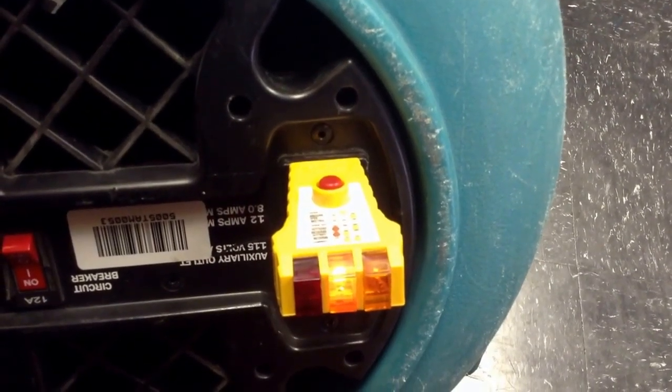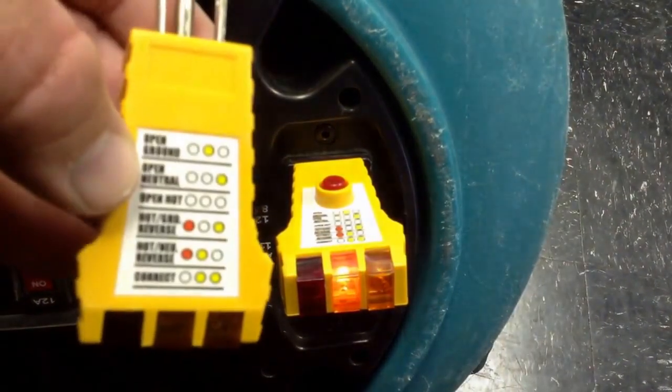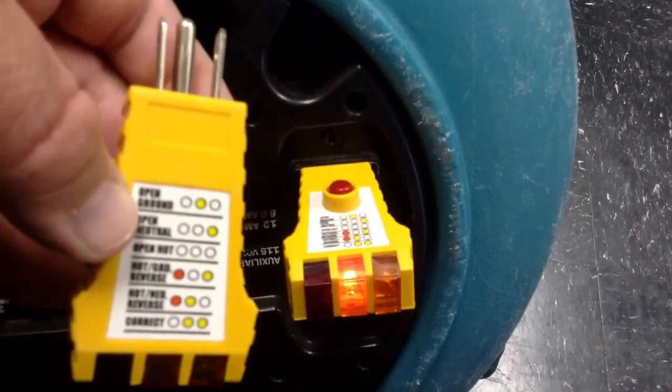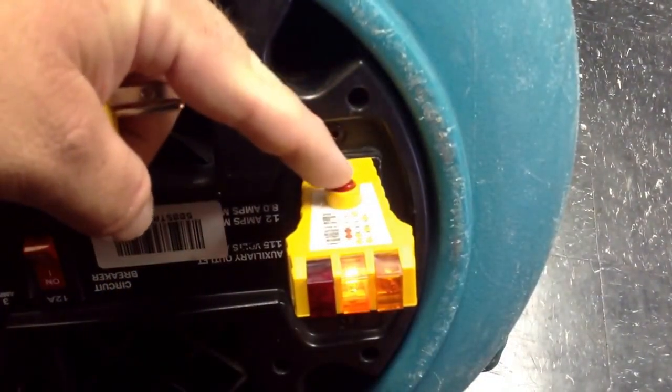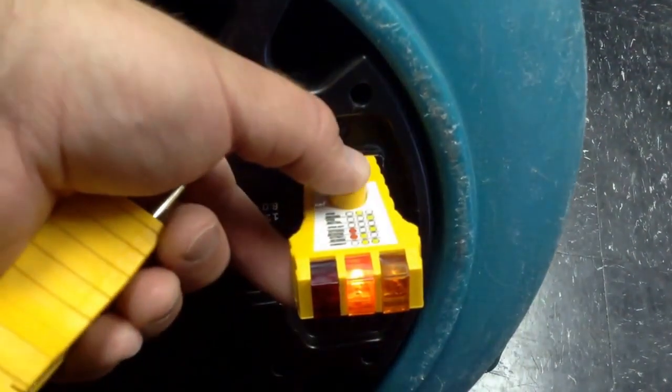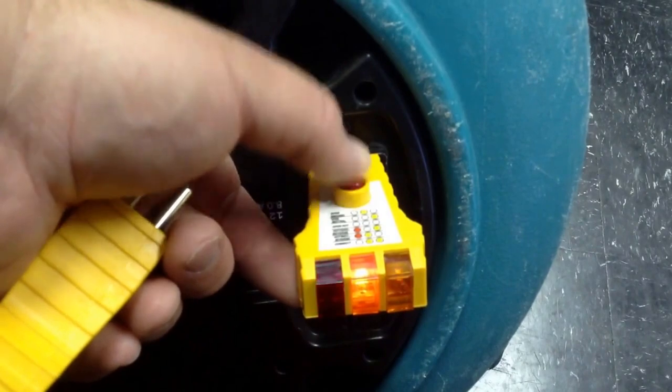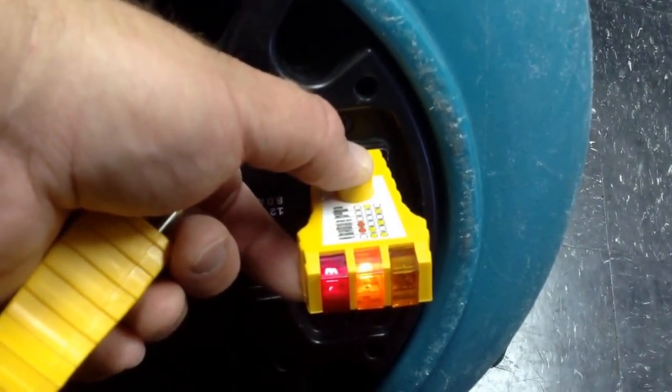As we can see here on this GFI plug we have one yellow light in the middle, meaning we have the top scenario here which is an open ground. So if we press and hold this, if it doesn't trip the GFI it means it's wired incorrectly. So as you can see when it tries to trip the GFI it now turns on the red light on the left.